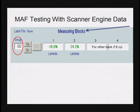If you can find your way to group 32, you're going to find a tremendous amount of great information. In measuring blocks one and two, I have two values: minus 18 in block number one and 24.2 in block number two. That's because these readings are from a four-cylinder car. If I had a six-cylinder car, I would have readings in blocks three and four as well.